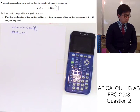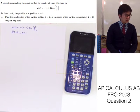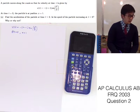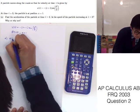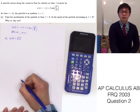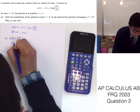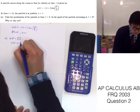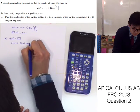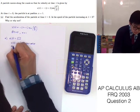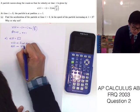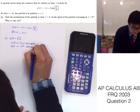For the first problem we're supposed to find the acceleration of the particle at time t equals two, and also check whether the speed of the particle is increasing at t equals two. We know that the velocity function is the first derivative, and to find the acceleration we're going to find the second derivative of the function.